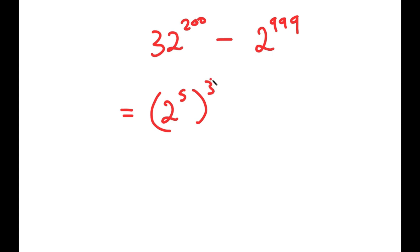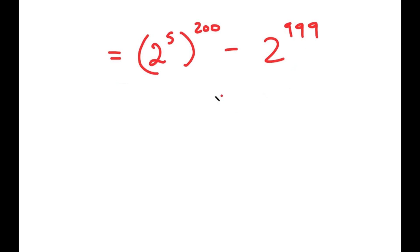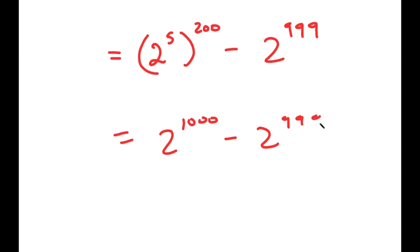So I get 2 to the power of 5 to the power of 200, minus 2 to the power of 999. And this turns into 2 to the power of 1000 minus 2 to the power of 999, because the 5 and 200 multiply.